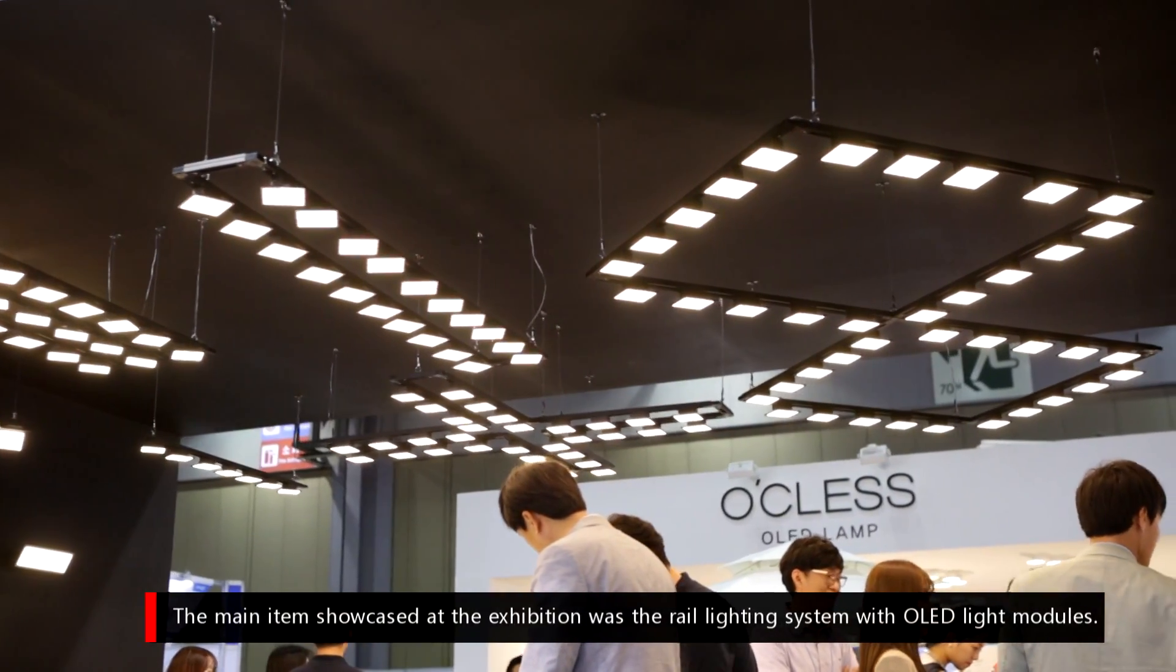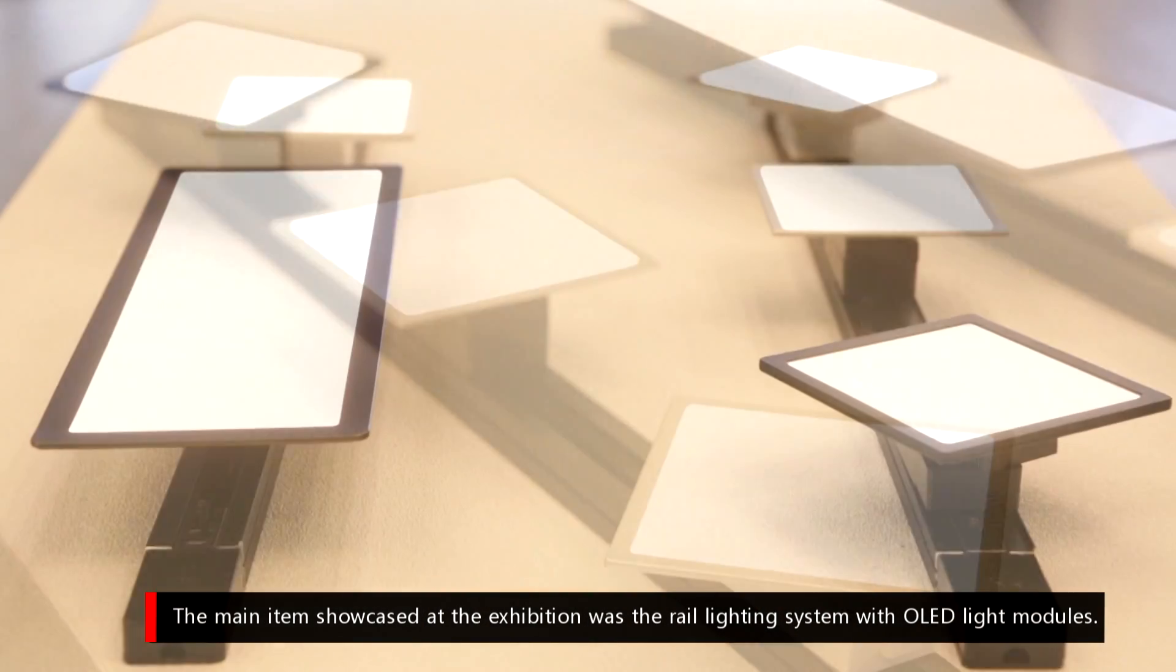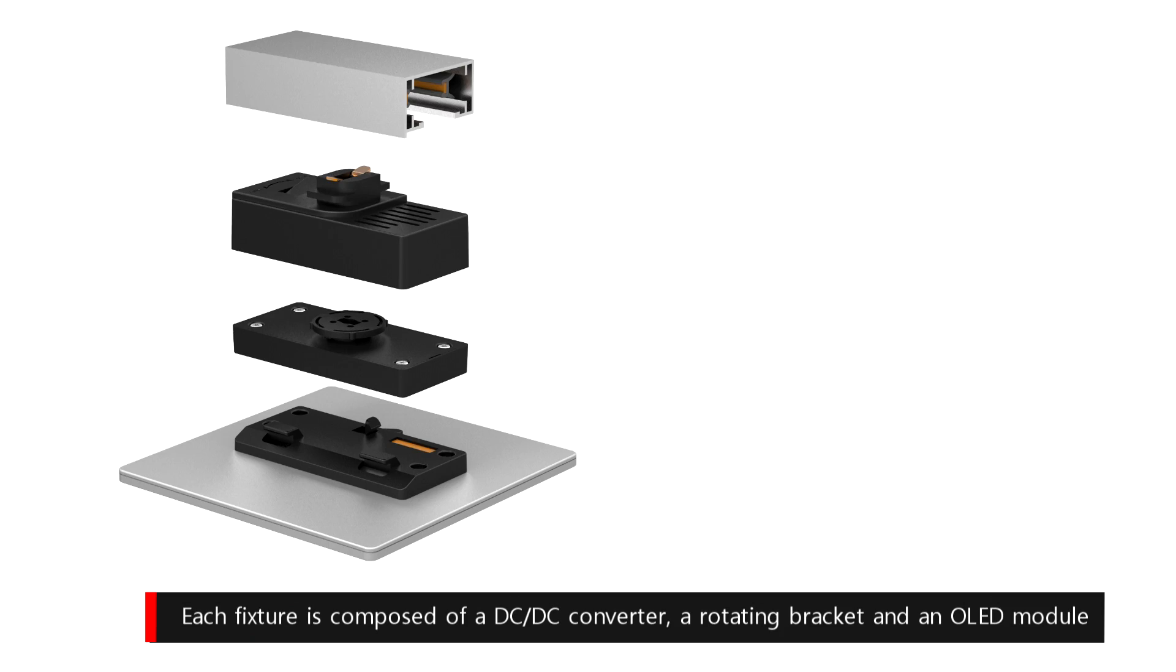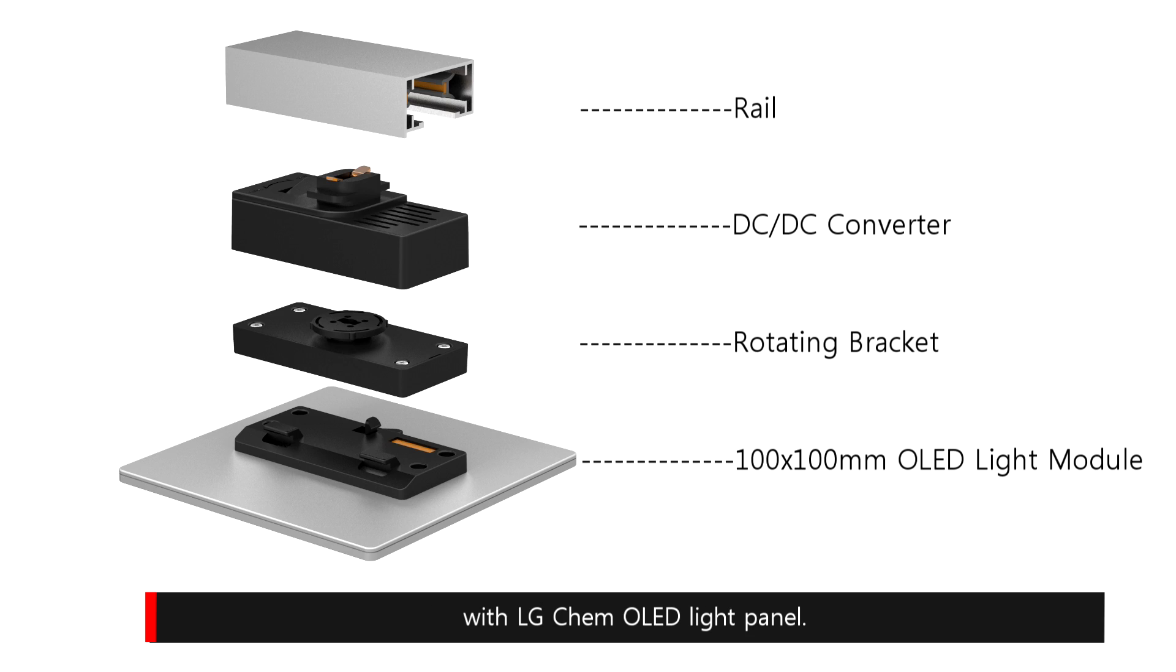The main item showcased at the exhibition was the rail lighting system with OLED light modules. Each fixture is composed of a DC-DC converter, a rotating bracket, and an OLED module with LG Chem OLED light panel.